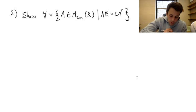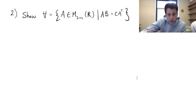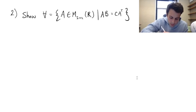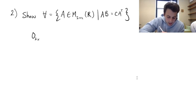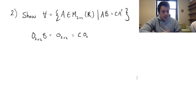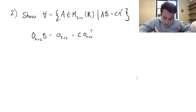First, similarly to before, we want to show the zero matrix is in this subspace. The 2×2 zero matrix times B is still a 2×2 zero matrix, and this equals C times the transpose of the 2×2 zero matrix, so the zero matrix is in V.